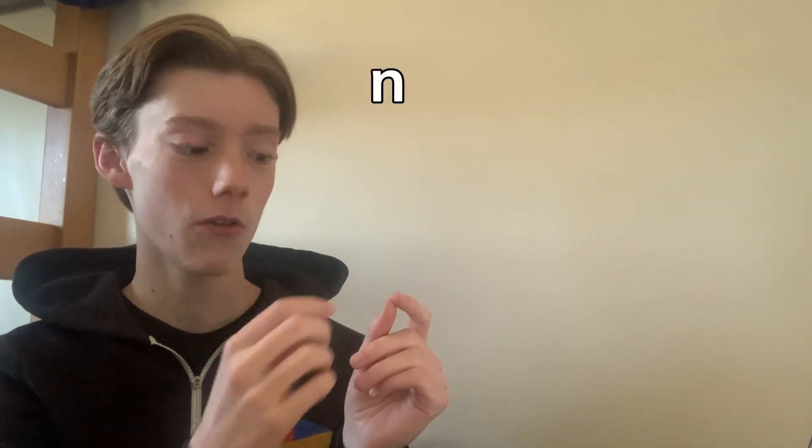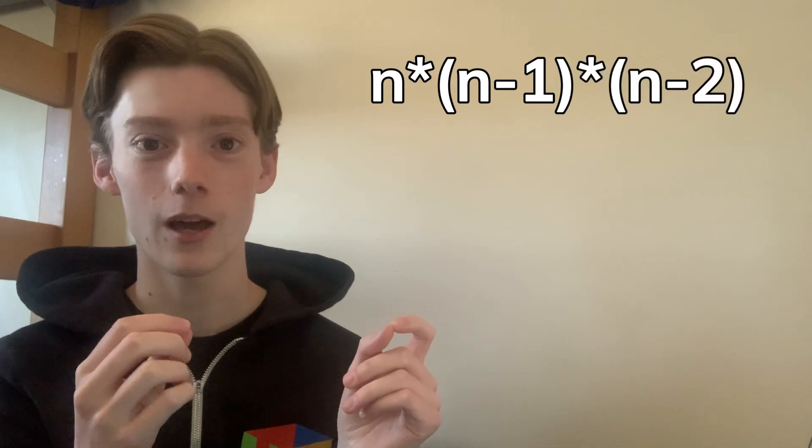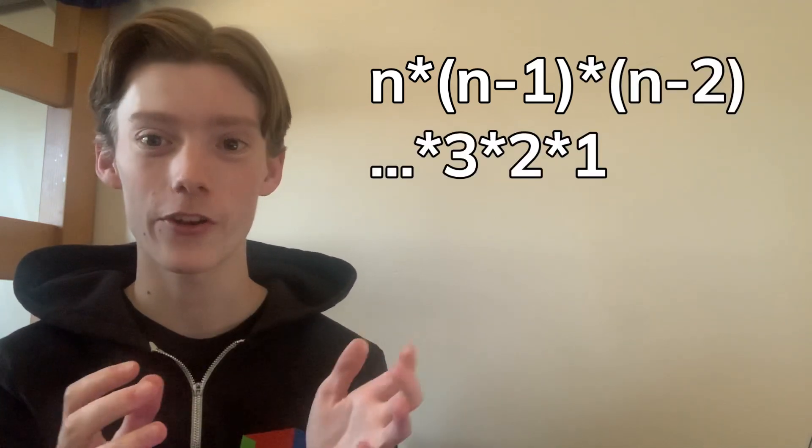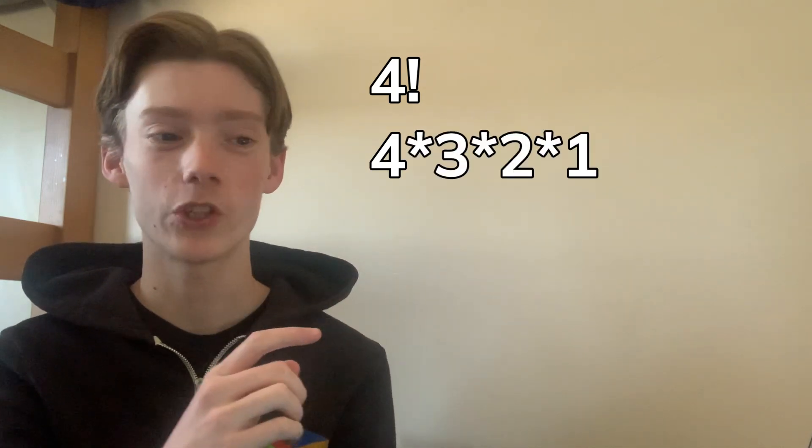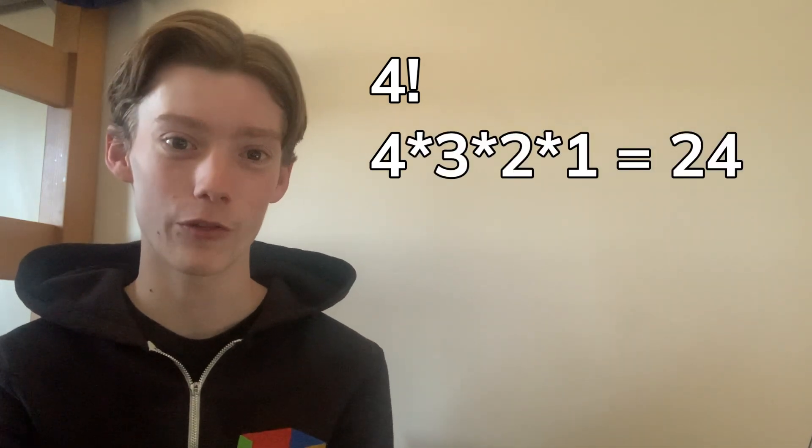So a factorial is kind of like taking a number and then all the numbers smaller than it up until zero multiplied by each other. So 4 factorial is 4 times 3 times 2 times 1 which equals 24. So that's the factorial function.